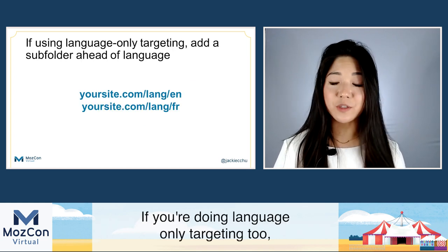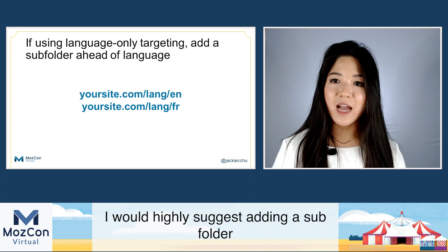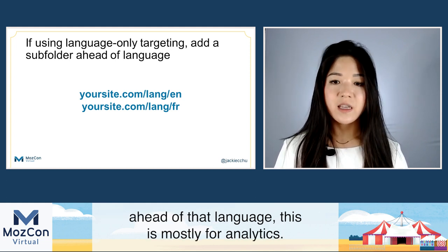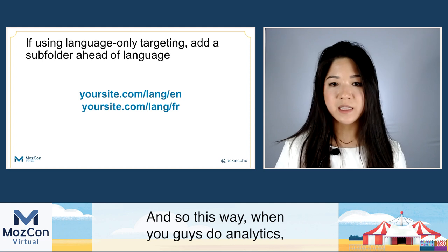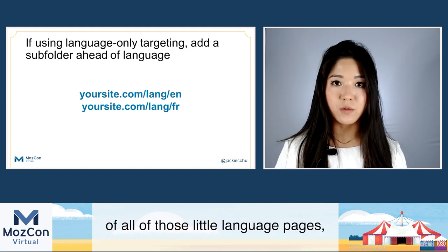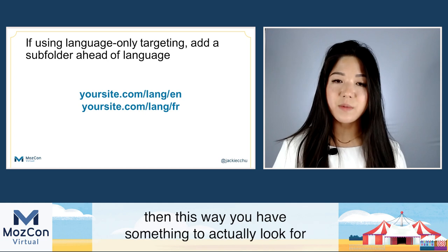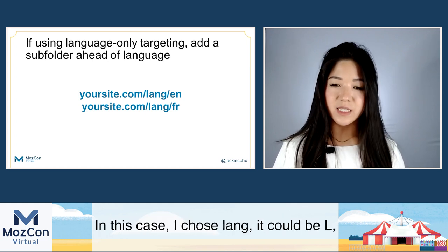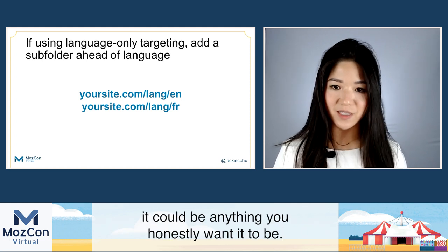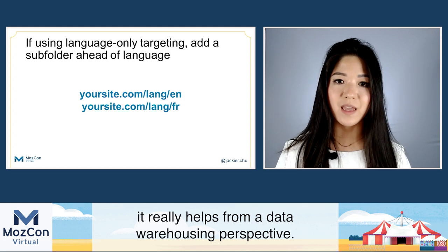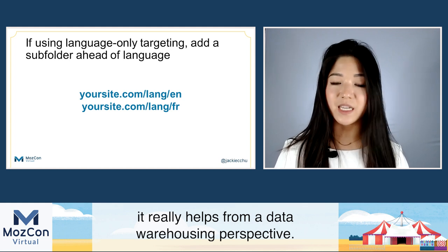If you're doing language-only targeting, I would highly suggest adding a subfolder ahead of that language — mostly for analytics. This way, when you do analytics and want to look at the performance of all those language pages, you have something to actually search for and perform regexes on. In this case, I chose 'lang' — it could be 'L' or anything you want. Don't be afraid of adding this extra folder; it really helps from a data warehousing perspective.